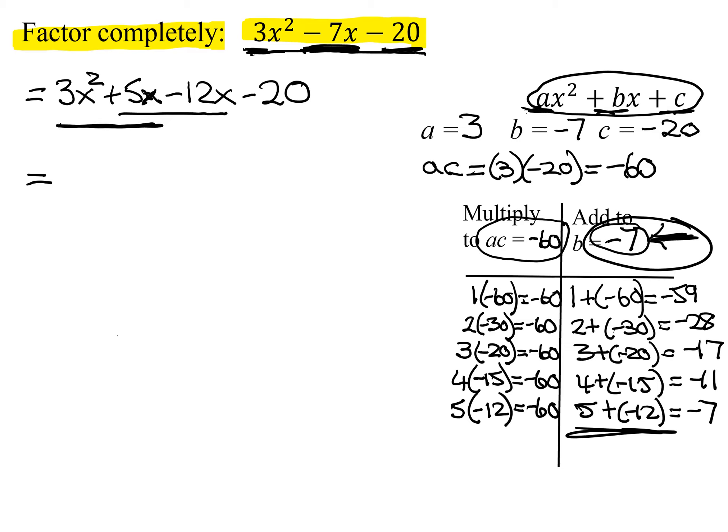Look at the first two. What do the first two have in common? Well, they have an x. So if I factor out an x, it's going to leave me with 3x plus 5. Then we bring down the middle sign, negative.